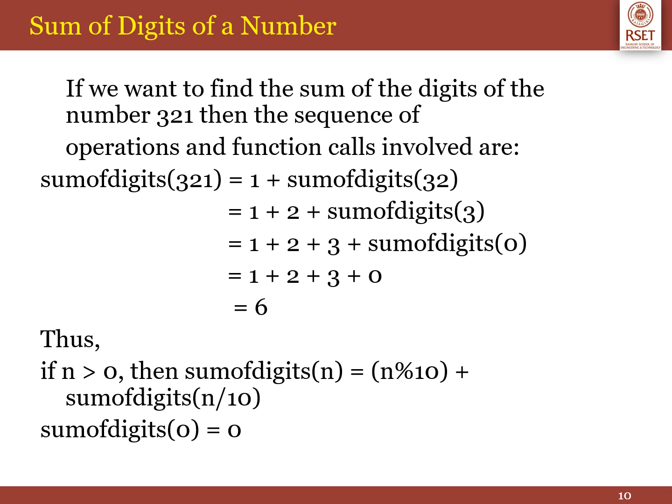The next program finds the sum of digits of a number using a recursive function. For example, with the number 321: dividing 321 by 10 gives remainder 1 and quotient 32. Dividing 32 by 10 gives remainder 2 and quotient 3. So the sum of digits of 321 is 1 + 2 + 3 = 6. The logic used is: if n > 0, sum of digits = (n % 10) + sum_of_digits(n / 10).